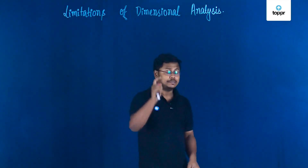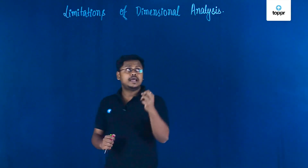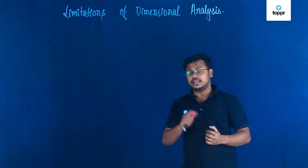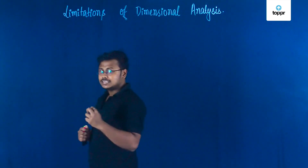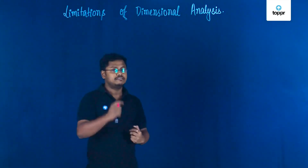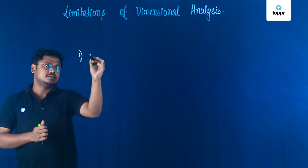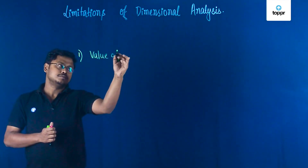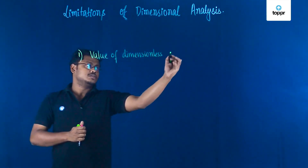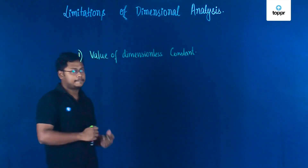The first limitation is that we cannot apply dimensional analysis to find the value of any dimensionless constant in your equation. So if your equation has any particular parameter which is dimensionless and it's a constant, you cannot determine the value of that dimensionless constant with the help of dimensional analysis. So the first drawback is: value of dimensionless constant.